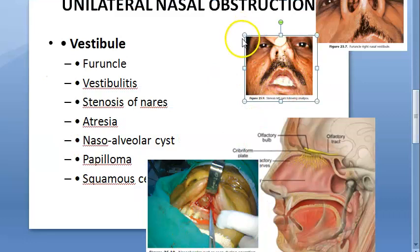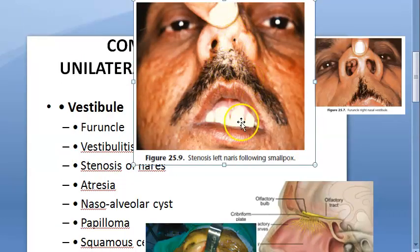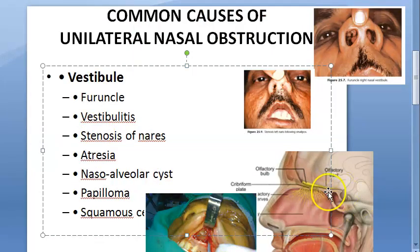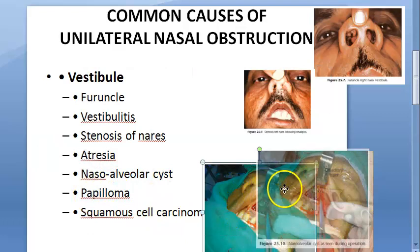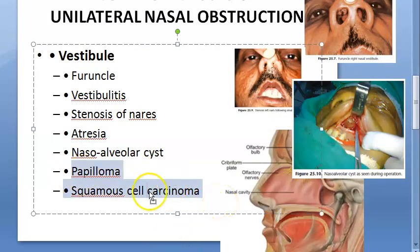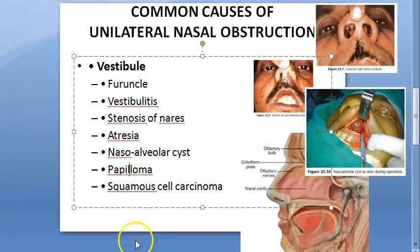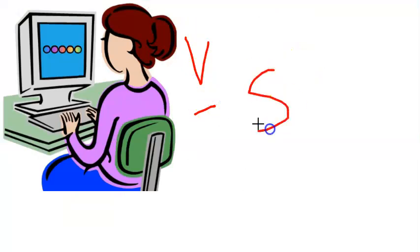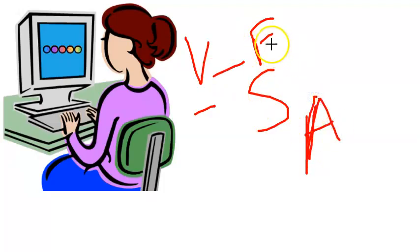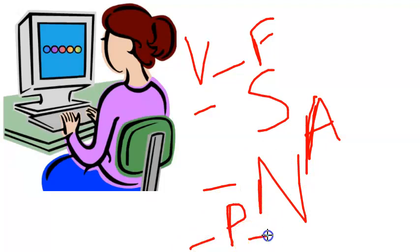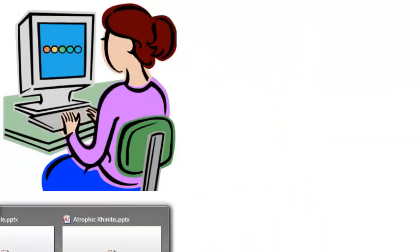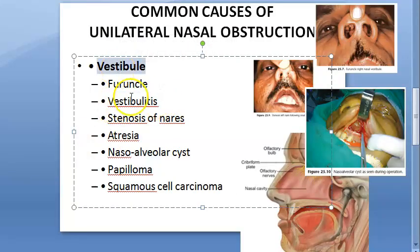Stenosis of the left nares due to smallpox causes unilateral nasal obstruction. Papilloma and squamous cell carcinoma are also causes - tumors are usually mentioned at the end. To summarize the vestibule causes: furunculosis, vestibulitis, stenosis of nares, atresia, nasoalveolar cysts, papilloma, and squamous cell carcinoma.